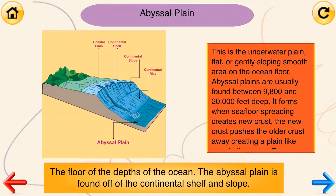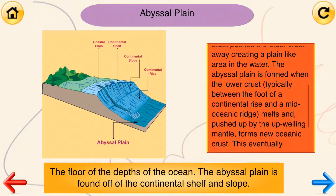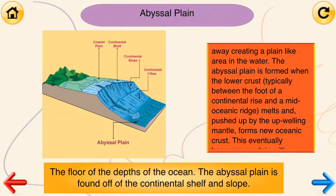Abyssal plains are usually found between 9,800 and 20,000 feet deep. It forms when seafloor spreading creates new crust. The new crust pushes the older crust away, creating a plain-like area in the water.